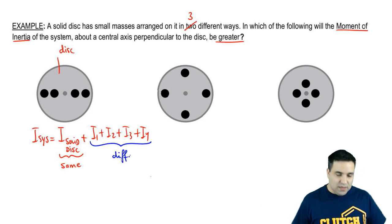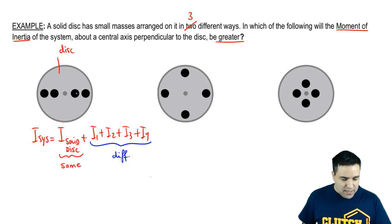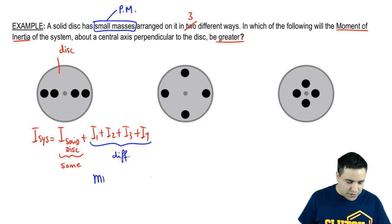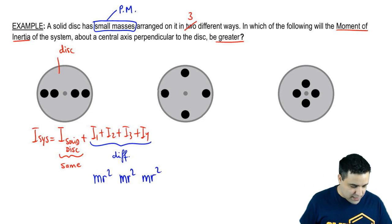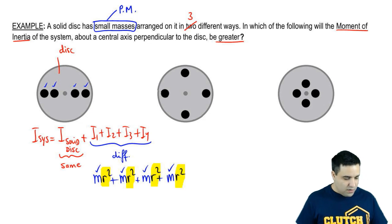So the difference will be in how the tiny masses are arranged around the disk. Now, if these are point masses, which they should be treated as point masses because it says they're small masses, the equation for them is mR squared. So you have a bunch of mR squares, mR squared, mR squared, four times. Now, if you have the same four masses everywhere, these m's will also be the same. So it's going to come down to the r's for each mass. In other words, how far from the axis of rotation they are.